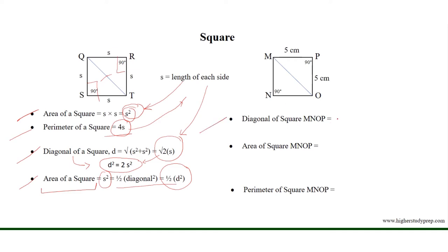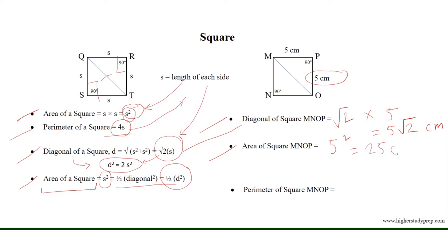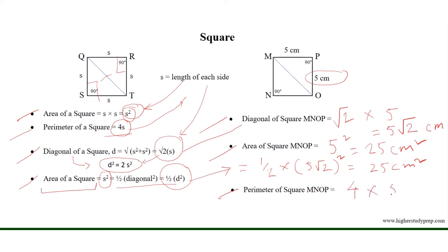For a square with each side equal to 5√2 cm, the diagonal equals √2 times 5√2, which gives 10 cm. The area equals half times the diagonal squared, that is half times (5√2)² equals 25 cm². This matches the formula: area equals side squared, confirming the result.